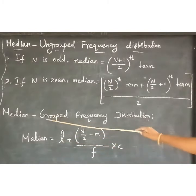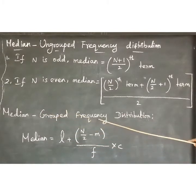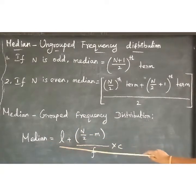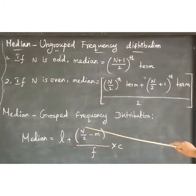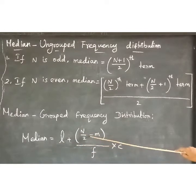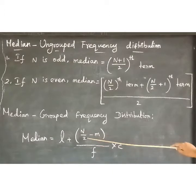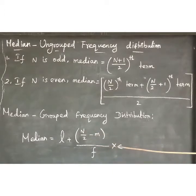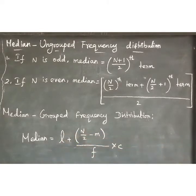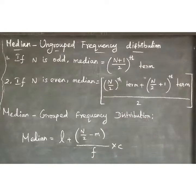Next, median formula for grouped frequency distribution: median equals L plus (n/2 minus m) divided by f, into c. Where L is the lower boundary value of the median class, f is the frequency, and c is the width of the class interval.